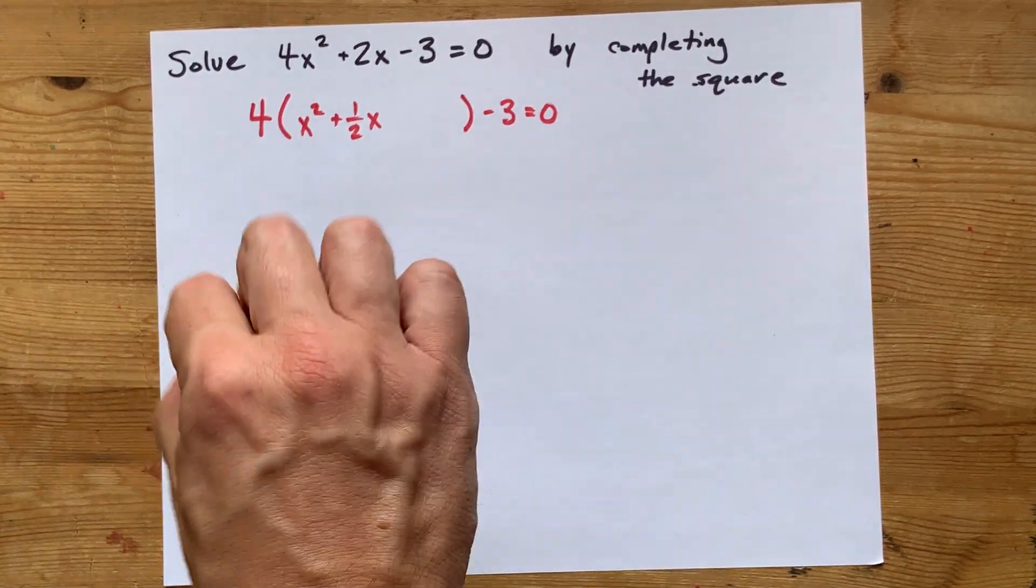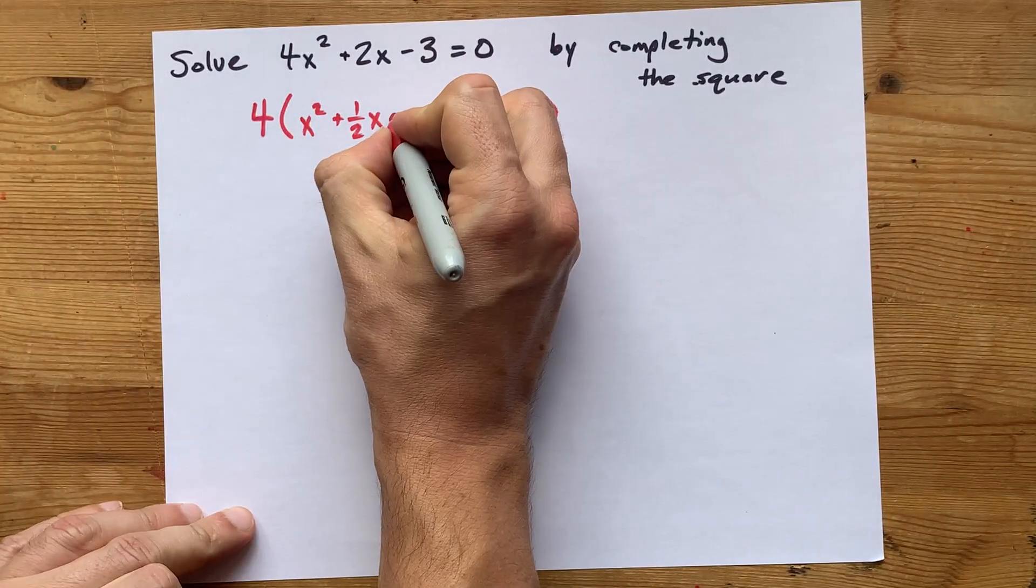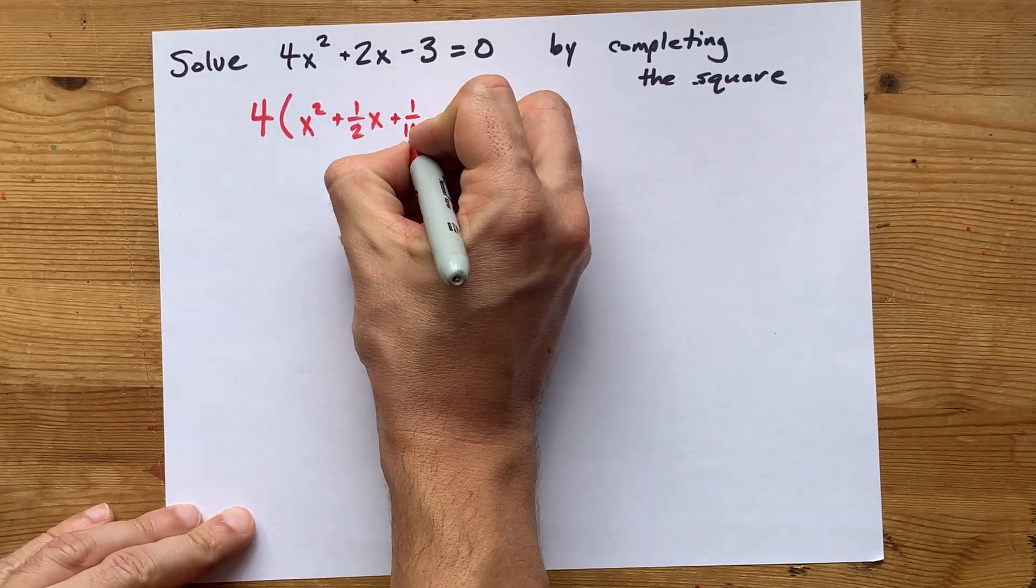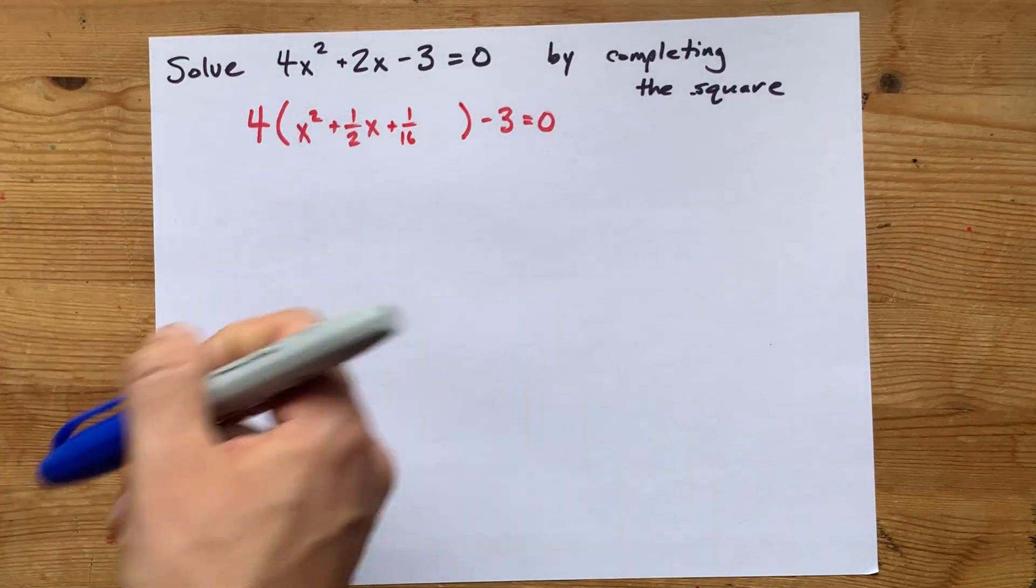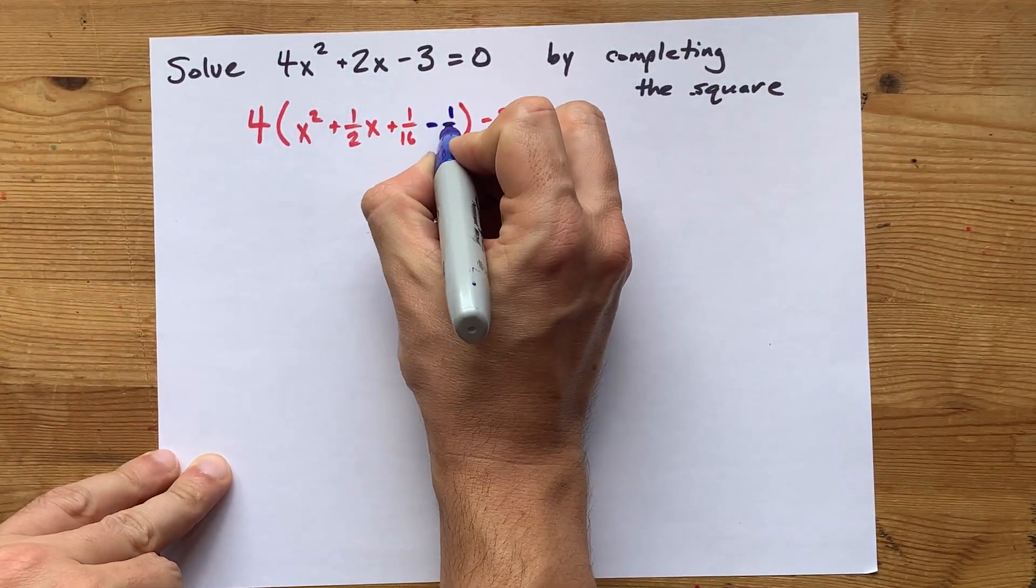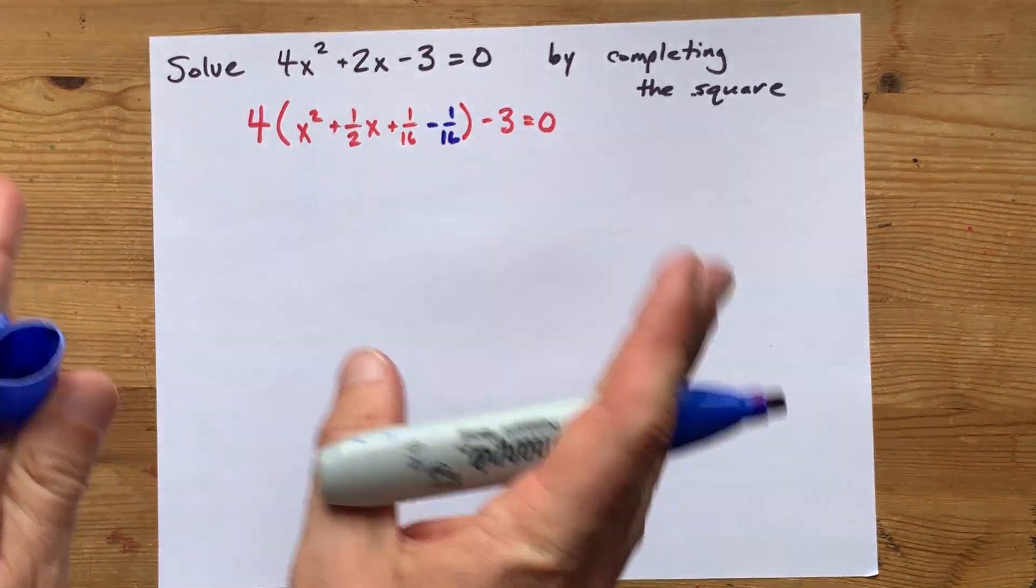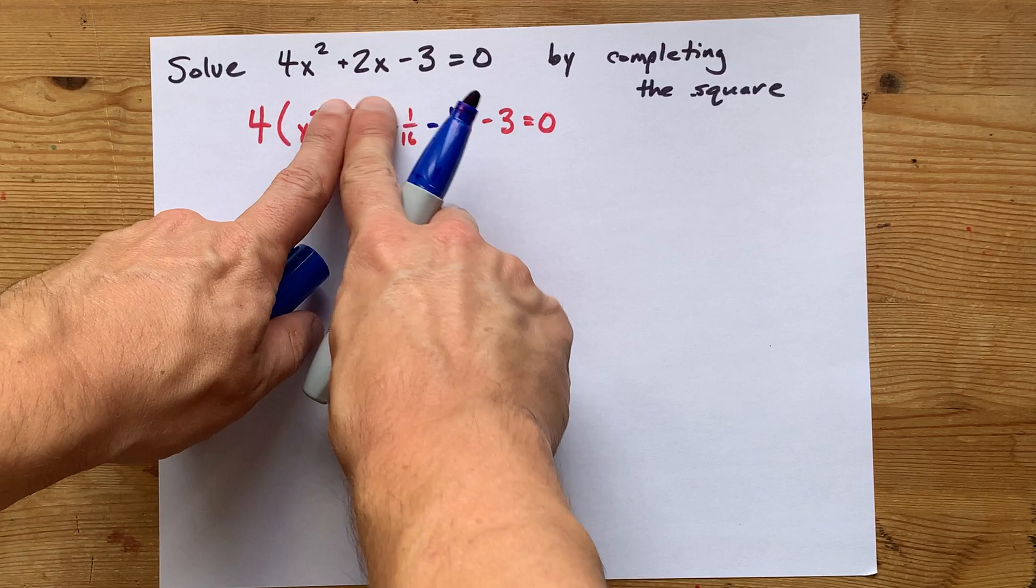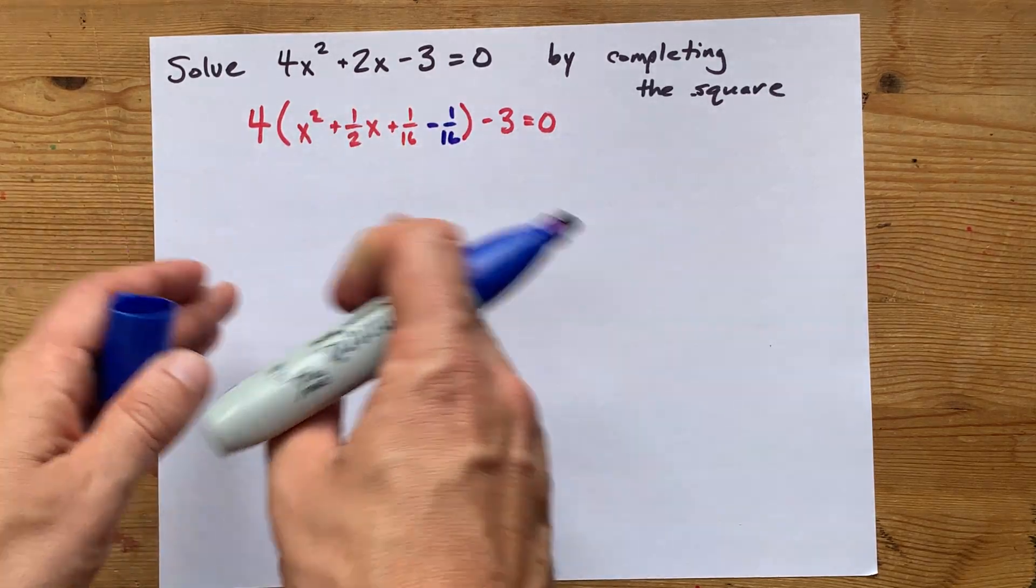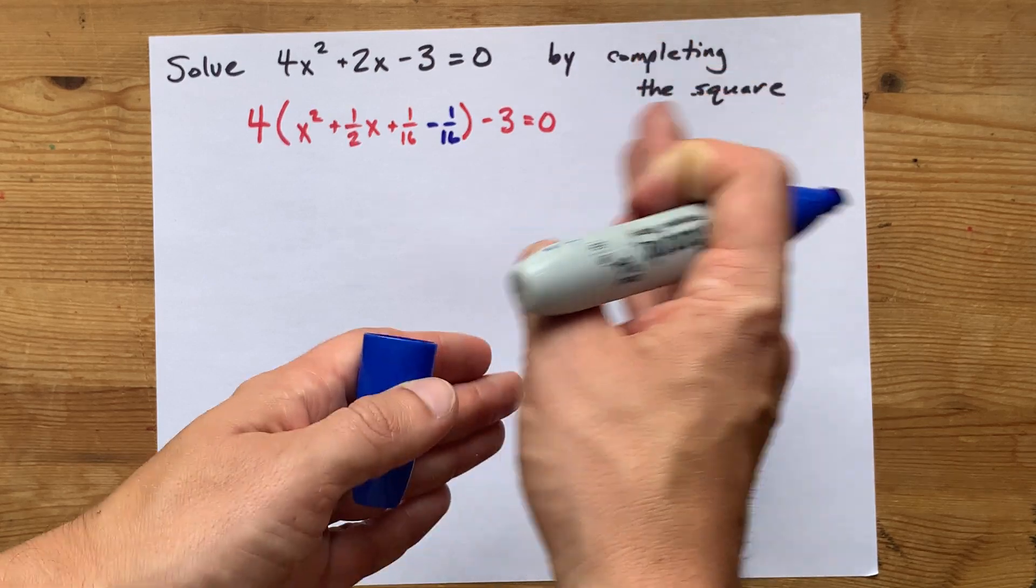Half of that is a quarter, and squared is 1/16th. So I am going to write plus 1/16th, and to compensate, I am also going to write minus 1/16th. I know that these cancel each other out, but what I'm trying to do here is turn the first three terms into a perfect square trinomial. That's what we're doing with completing the square.